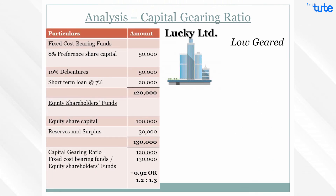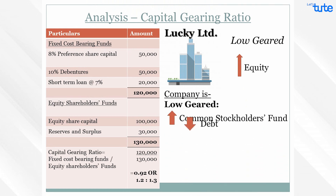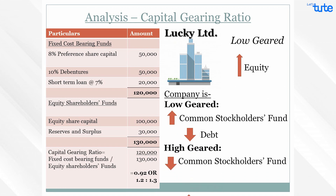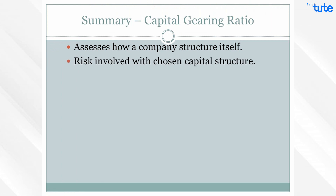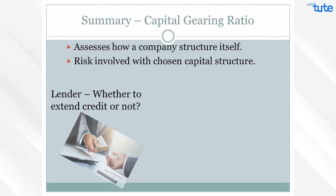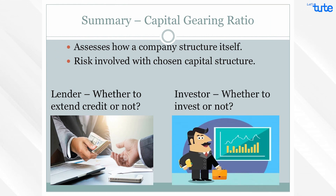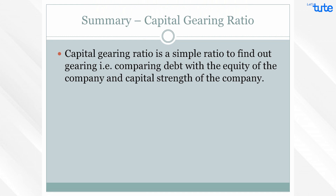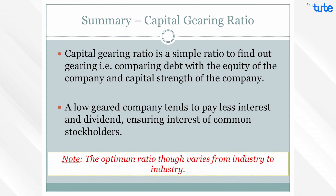Here, the company is said to be low geared since it has comparatively higher equity. A company is low geared if the larger portion of capital is composed of common stockholders' equity compared to lower debt, and highly geared when composed of less common stockholders' equity compared to higher debt. This ratio assesses how a company structures itself and the amount of risk involved with its chosen capital structure. Lenders use this ratio to decide whether to extend credit, and investors use it to determine whether to invest. A low geared company tends to pay less interest and dividend, ensuring the interest of common stockholders. The optimum ratio varies from industry to industry.